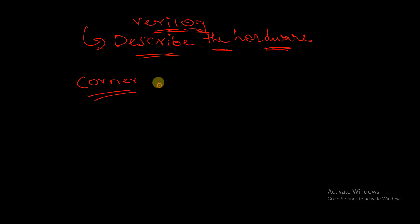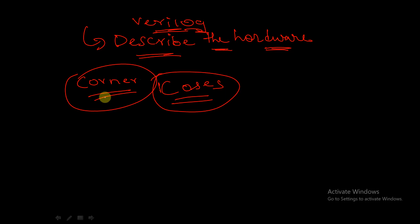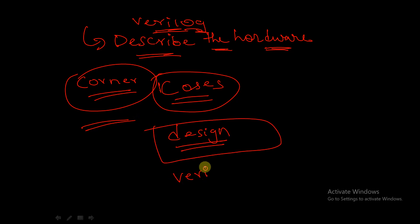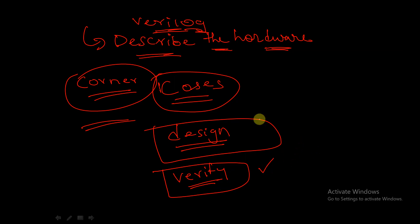We will discuss what corner cases are in upcoming sessions. With the help of Verilog, we cannot achieve 100% functional coverage. Don't worry about these technical terms — functional coverage, corner cases — we will discuss them in our upcoming sessions. Basically, Verilog is a design language. With the help of Verilog, we can design the hardware, but we cannot verify the design completely or extensively. That was a main drawback of Verilog.